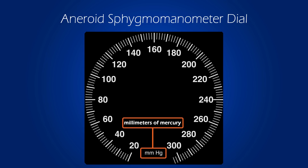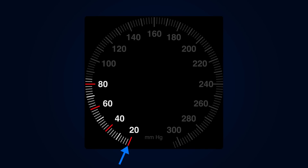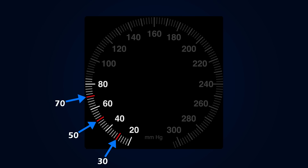Also on the dial, you'll notice that there are lines in various sizes. The largest lines represent values of 20 — this is 20, this is 40, 60, and so on. The medium lines represent values of 10 — this is 30, 50, 70, and so on.